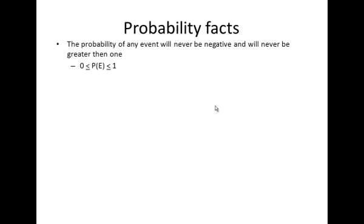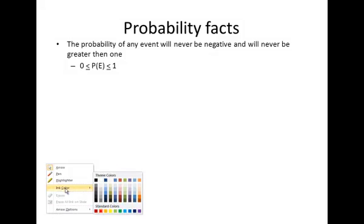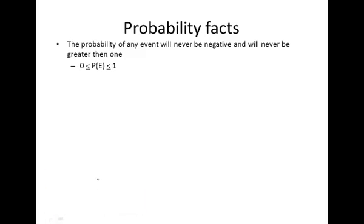Facts about probability: The probability of any event will always be between 0 and 1. The other way to say it is that the probability of something will always be between 0% and 100%.